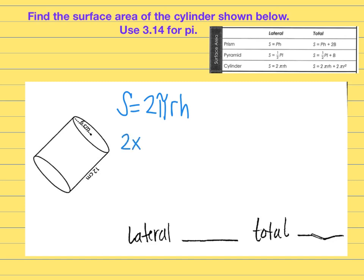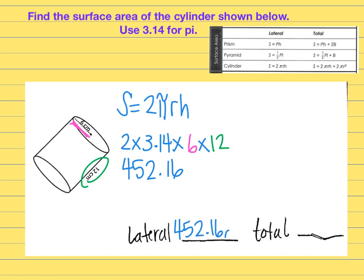I would have 2 times 3.14 times for us the radius was 6 and the height of this particular can or cylinder was 12. When you type that all the way in your calculator, the answer that you end up getting is 452.16. So the lateral surface area would be measured in square units. So 452.16 square centimeters.